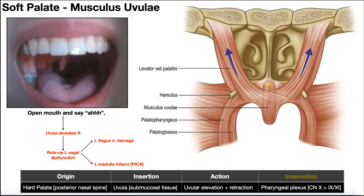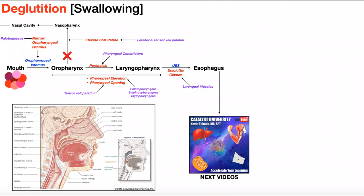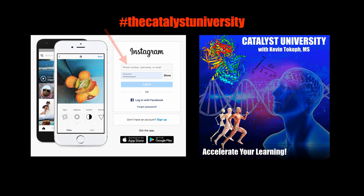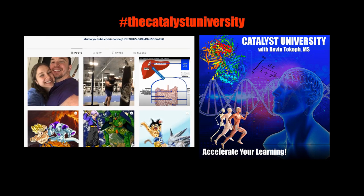Uvular deviation is one way to screen for vagus nerve dysfunction. In a future video, we'll also look at the gag reflex, which is associated with the vagus nerve and cranial nerve 9. We've now looked at all the major muscles involved in moving a bolus of food from the mouth down through the pharynx and into the esophagus. The upper esophageal sphincter and esophagus details will be covered in the next few videos. Thanks for tuning in — please like, subscribe, and check out the Instagram.